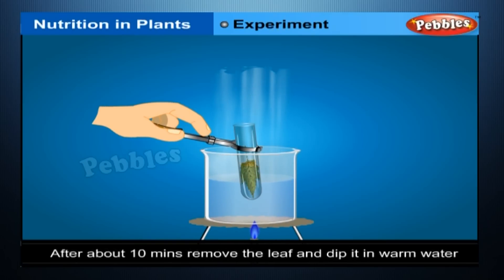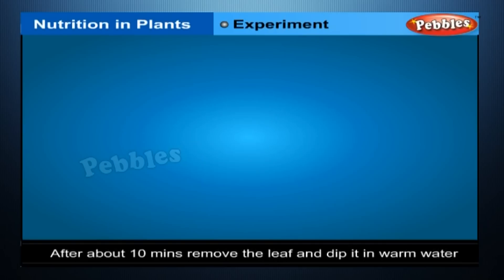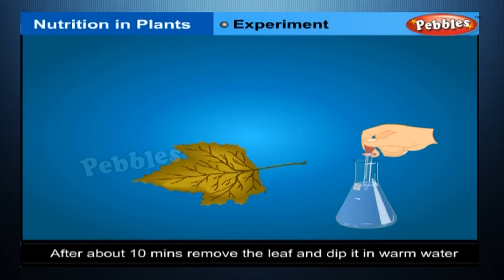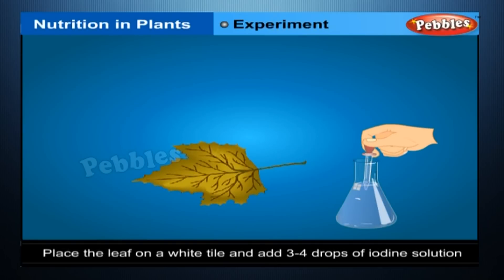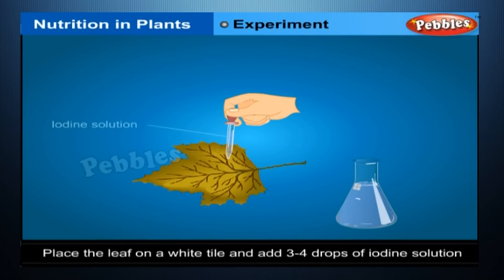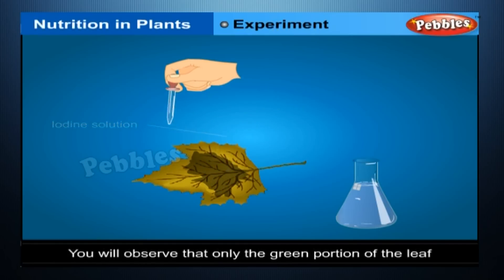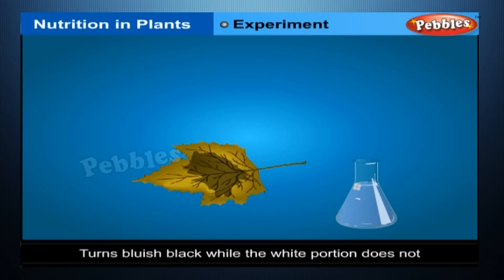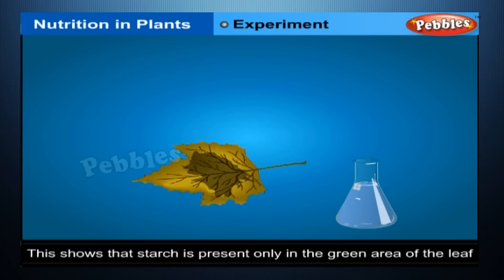After about ten minutes, remove the leaf and dip it in warm water briefly to soften it. Now place the leaf on a white tile and add three to four drops of iodine solution. You will observe that only the green portion of the leaf turns bluish-black while the white portion does not. This shows that starch is present only in the green area of the leaf. Thus, only green leaves can photosynthesize and make food.